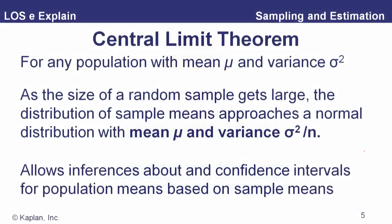The sample means are more closely clustered around the true mean — the variance of the sampling distribution equals the variance of the population divided by the sample size. This is what allows us to make inferences and construct confidence intervals using the standard normal distribution, regardless of the shape of the underlying population distribution.